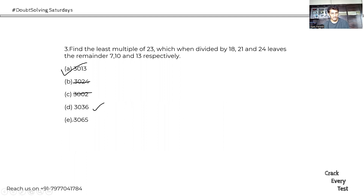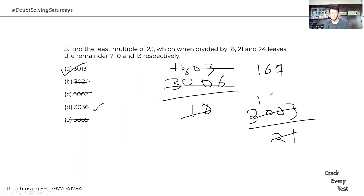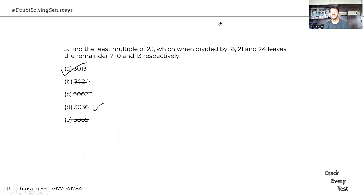We verify: 3006 divided by 18 gives 167, so that checks out. Then 3003 divided by 21 — 1001 is a multiple of 7, so that works. For 24: 3000 is divisible by both 3 and 8, so by default divisible by 24. Therefore 3013 is your answer.